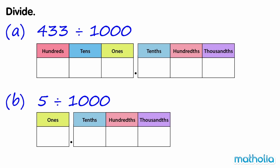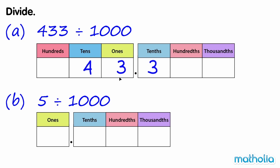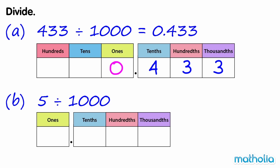Divide. A. 433 divide 1000. Write 433 in a place value chart. We can divide by 1000 by shifting the digits three places to the right. 433 divide 1000 equals 0.433.